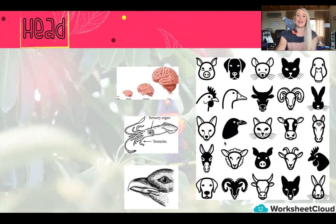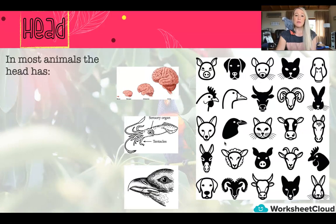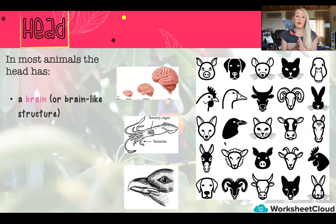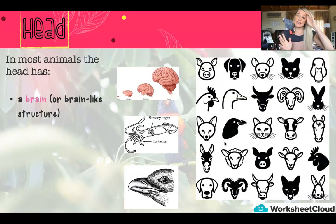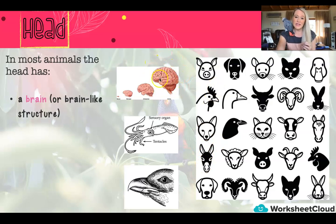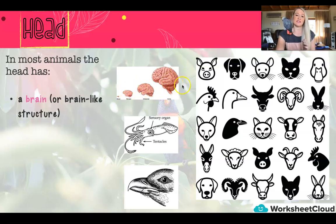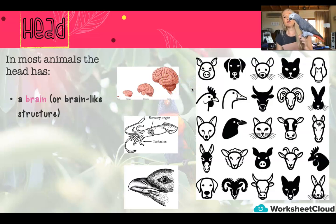Let's kick it off and look at the head. So in most animals, the head has firstly a brain or a brain-like structure. Remember, depending on the size, animals come in all shapes and sizes, and depending on the size of the animal, there is always a brain inside the head. You can see with this picture we've got a big brain here that is us humans, then a chimpanzee, and then eventually it goes smaller and smaller depending on the size of the animal. If you have to look at Pebbles' head - look how small his little head is. Can you imagine the size of his brain?